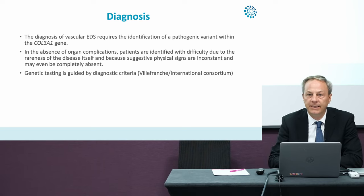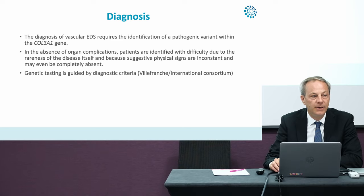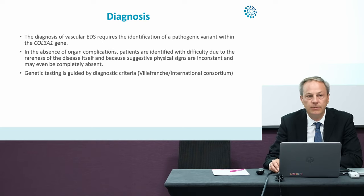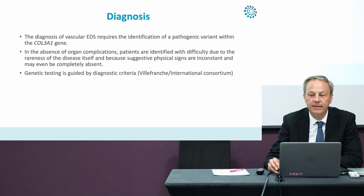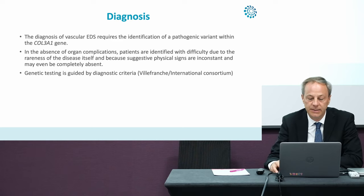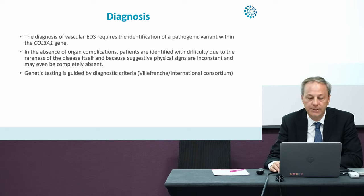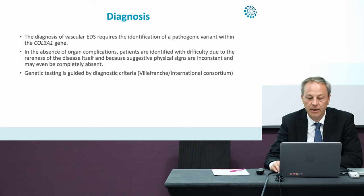The formal diagnosis of vascular EDS requires the identification of a pathogenic mutation within the COL3A1 gene. When there is no family history of vascular EDS, patients are rarely diagnosed. In other situations, most often patients would be symptomatic — having had one or more arterial or digestive complications — and would be referred for diagnosis. Others would be considered as relatives and be diagnosed with or without any clinical complication. The genetic testing is guided by the diagnostic criteria, which we will review here.